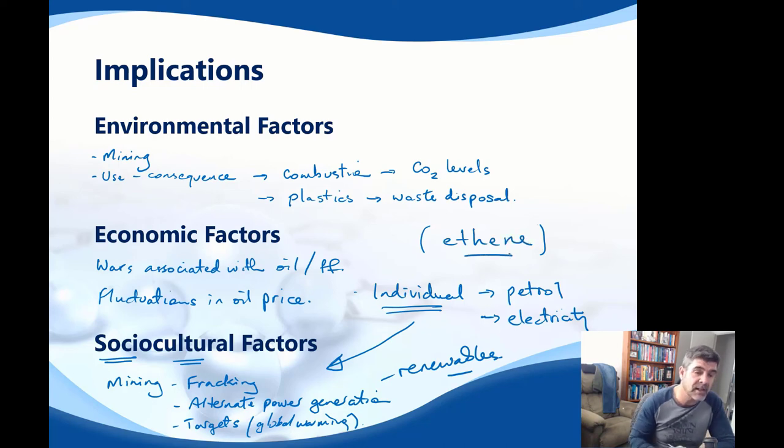And it's not just that ethene is a gas at room temperature, and therefore it's not a key component of something like crude oil. But through processes such as cracking, we can cut large hydrocarbons into smaller hydrocarbons, and therefore increase our proportion of desired molecules like ethene.